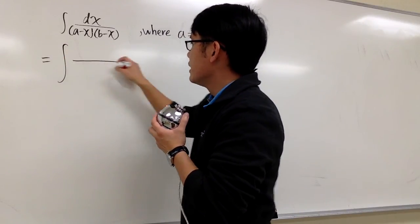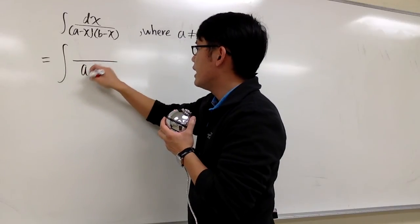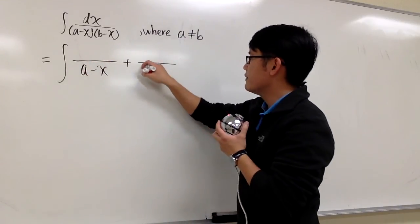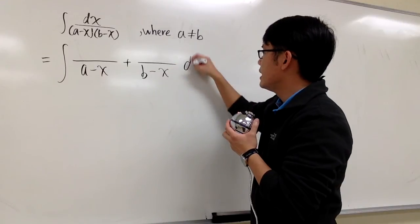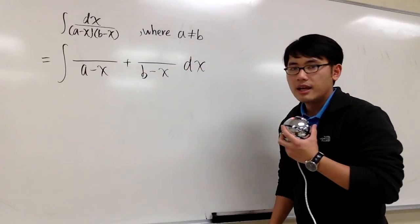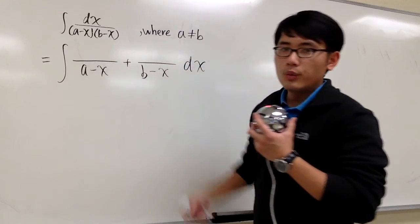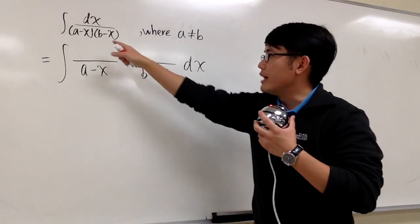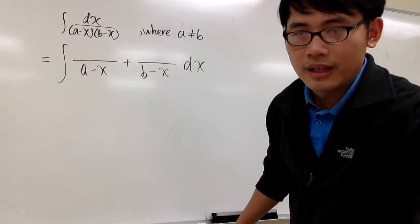So I will write this as integrating something over (a-x) plus something over the second factor (b-x). And let me put the dx on the side. To figure out these numbers, we can use cover-up, because they are just linear factors. So I need both ends.